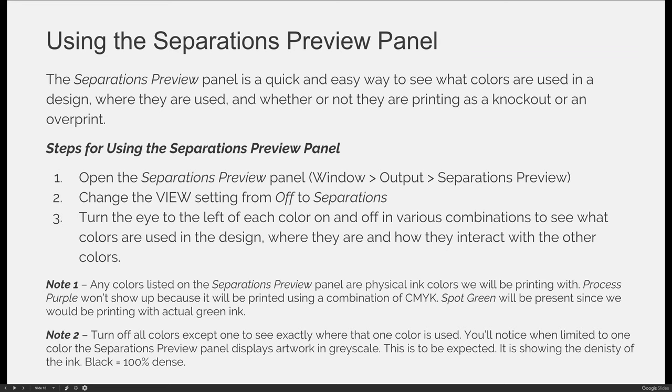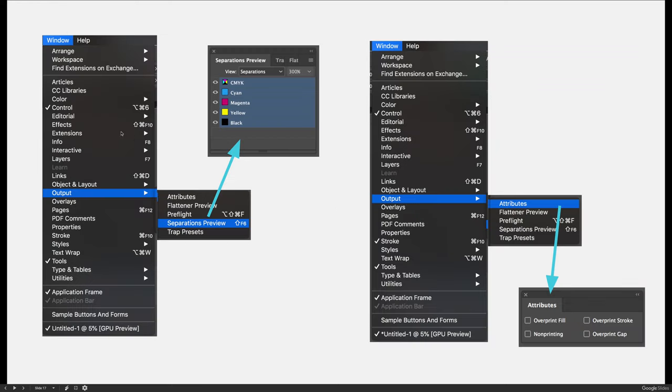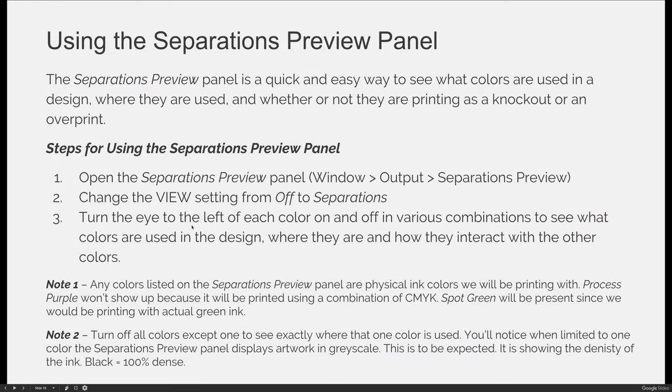Using the separations preview panel is important and you should understand how to do it properly. It's a quick and easy way to see what colors are used in a design, where they're used, and whether they are printing as a knockout or an overprint. The steps are: one, open the separations preview panel via Window > Output > Separations Preview; two, change the view setting from Off to Separation to activate the separations and see a more accurate representation of how something will print; three, use the eye icon to the left of each color to turn them on and off in various combinations to see what colors are used, where they're located, and how they interact with other colors.